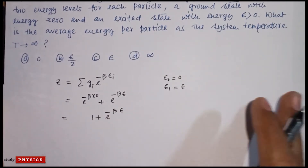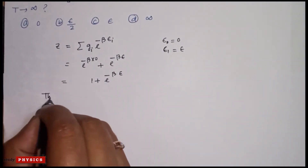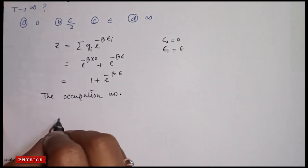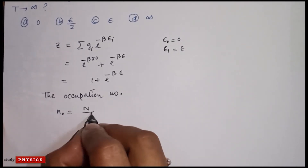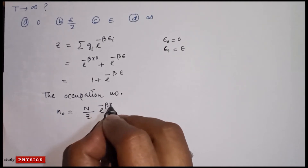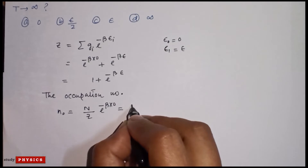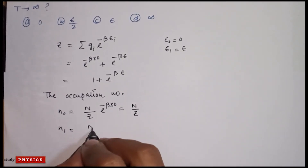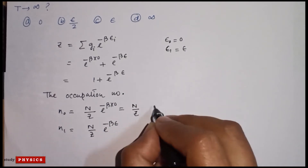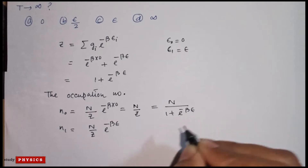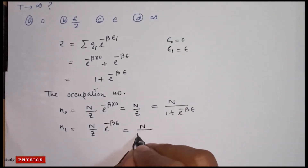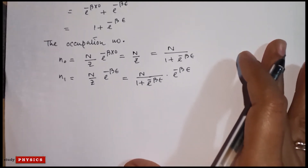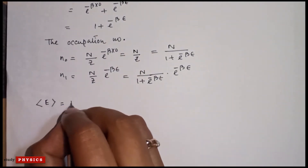Now the occupation numbers: the ground state occupation N₀ = (N/Z) × e^(−β×0) = N/Z. And N₁ = (N/Z) × e^(−βE) = N/(1 + e^(−βE)) × e^(−βE). Now the average energy E_avg = N₀E₀ + N₁E₁.